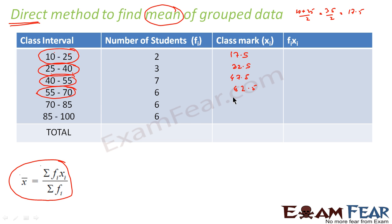70 plus 85 by 2, that is 77.5, and 85 plus 100 by 2, that is 92.5. So we have all the values of xi.